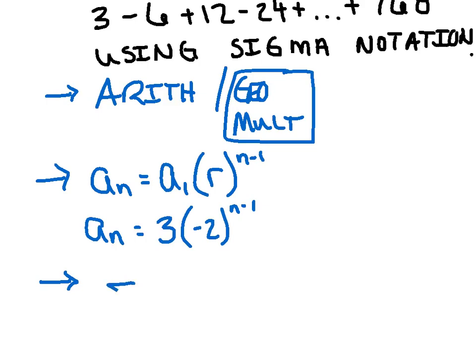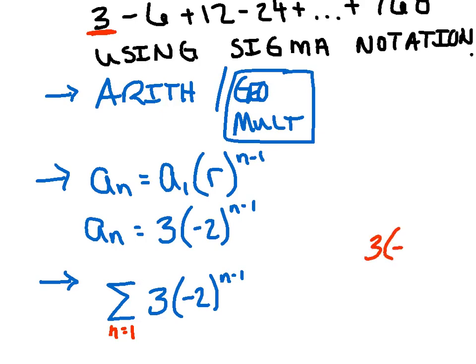We have three times negative two to the n minus one. The only thing missing is the starting and ending values. Whatever number you substitute for n needs to produce the first term of three. I tried n equals one: three times negative two to the one minus one power is three times negative two to the zero, and anything to the zero power is one, so I get three. That checks — n equals one produces the first term.